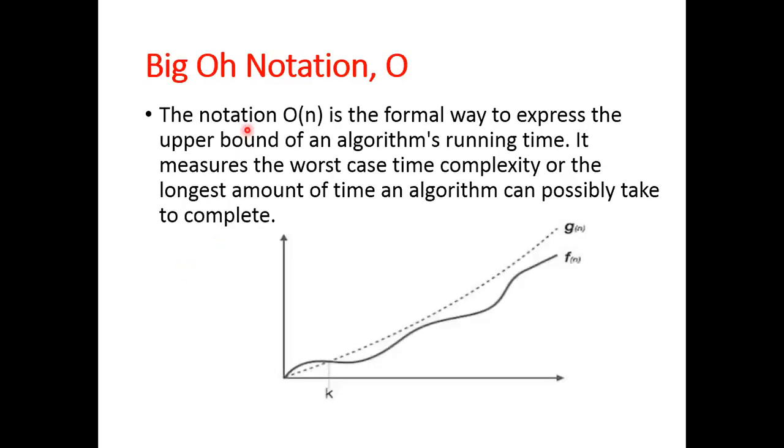First is Big O notation. The notation O(n) is the formal way to express the upper bound of an algorithm's running time. It measures the worst case time complexity or the longest amount of time an algorithm can possibly take to complete. Big O notation is used to calculate the worst case.